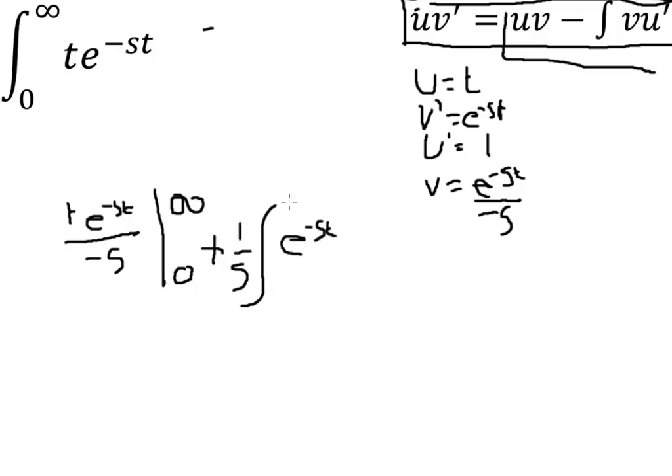Then if we integrate this part we shall get minus e to minus st over s squared between the limits of infinity and 0.